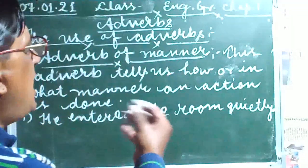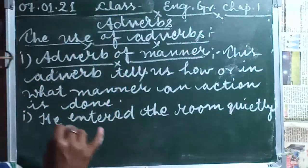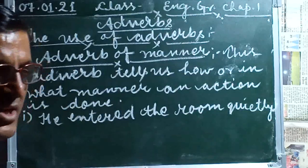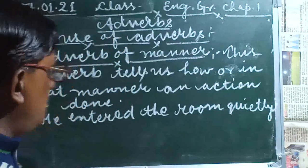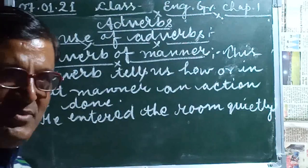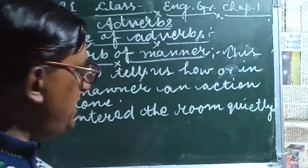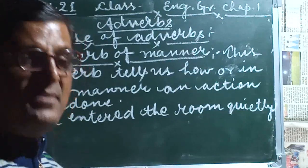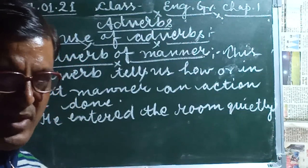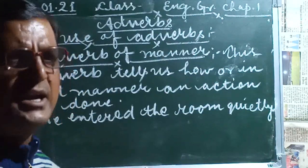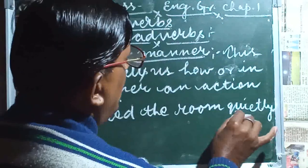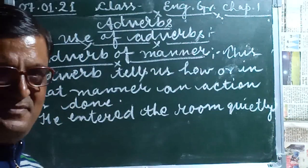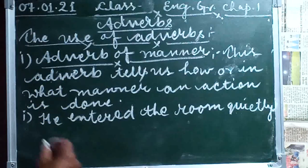First is how an action is done. Looking at example number one: 'He entered the room.' If we don't write an adverb here, we know he entered the room but we do not know how he entered. If we write 'quietly' here, it is confirmed that he entered the room very silently.